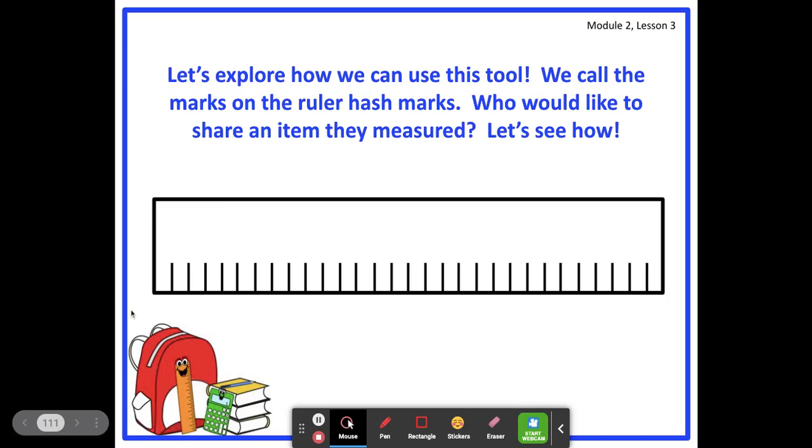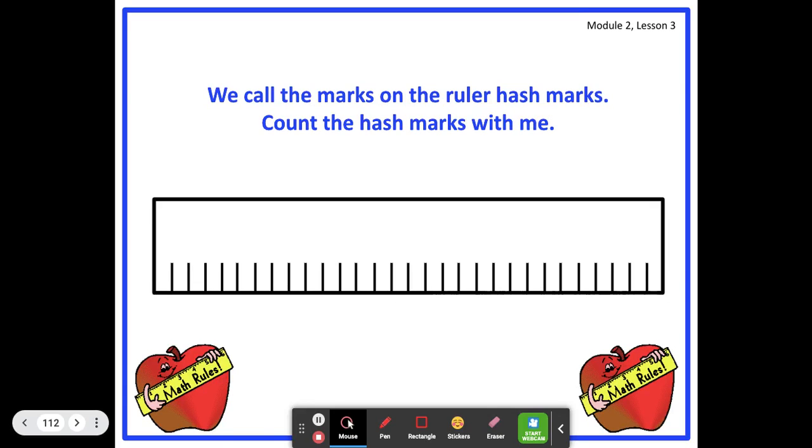What were some things to keep in mind when measuring? Right! One thing to keep in mind is to always start at the very end point. This is an end point and this is also an end point. The next thing to keep in mind is to count all the hash marks. And that this hash mark here starts with one. Count the hash marks with me.